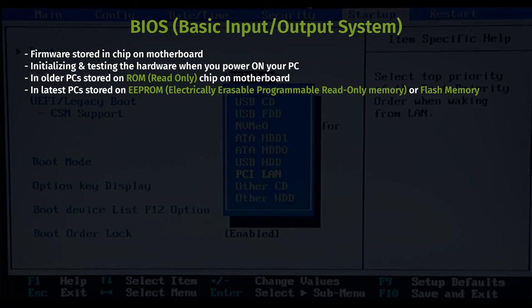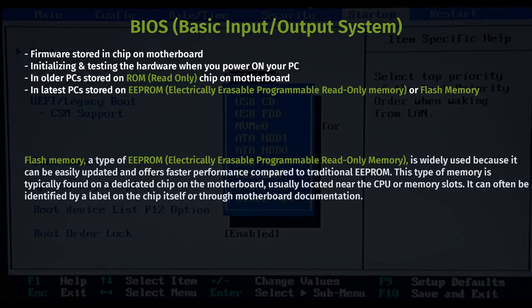EEPROM and flash memory are types of non-volatile memory that allow for updates to the BIOS firmware. These memory chips are soldered onto the motherboard. Flash memory, a type of EEPROM, is widely used because it can be easily updated and offers faster performance compared to traditional EEPROM. This type of memory is typically found on a dedicated chip on the motherboard, usually located near the CPU or memory slots.